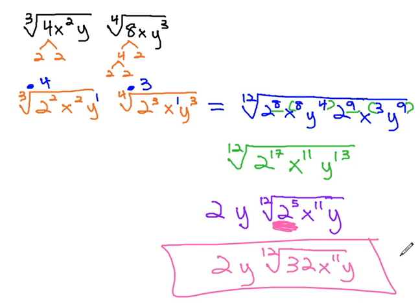We were able to multiply these radicals of mixed index together by finding a common index after we first factored the 4 and 8, which gave us some nicer numbers to work with, where we could use our exponent properties.